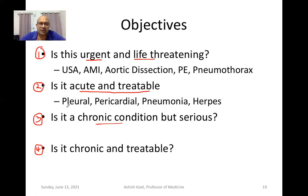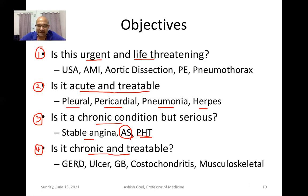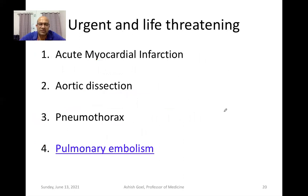In acute and treatable causes, this could be a pleural disease such as pleural effusion, a pericardial disease like pericarditis, pneumonia, or a herpes zoster infection. Under chronic conditions which could be serious, we could be dealing with stable angina, aortic stenosis, or chronic pulmonary hypertension. Among chronic but otherwise treatable conditions, we would have gastroesophageal reflux disease, peptic ulcer disease, gallbladder colic, costochondritis, or musculoskeletal pains.